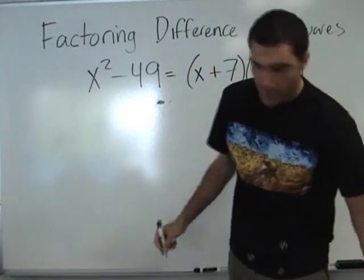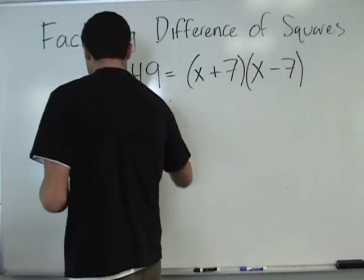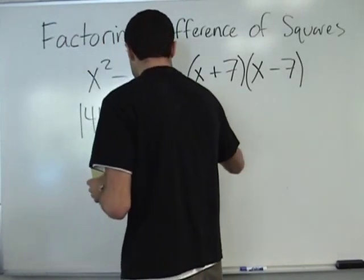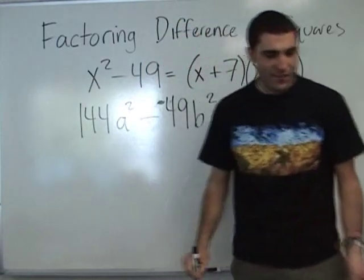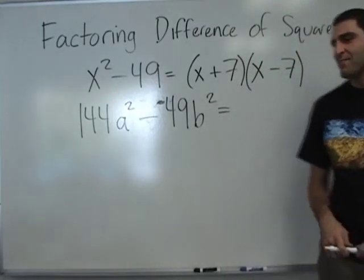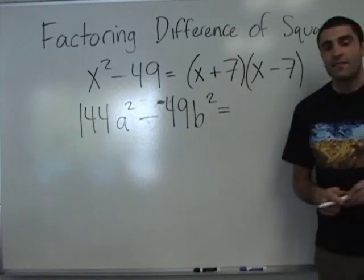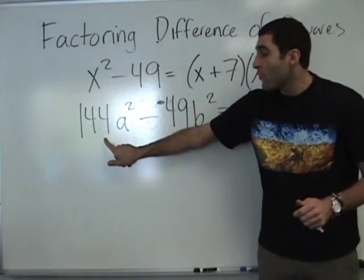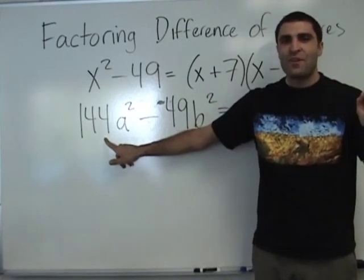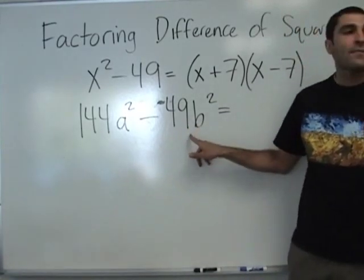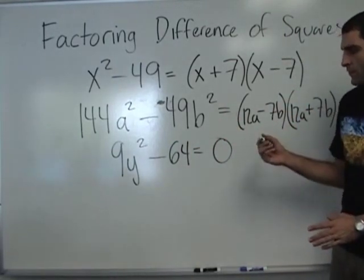So more difference of squares — identify the following as a difference of squares. Is this a difference of squares? Yes. What times what makes 144A squared? 12A times 12A. What times what makes 49? So we factor it, and then we set those factors equal to 0. Hopefully you're comfortable with factoring by now.